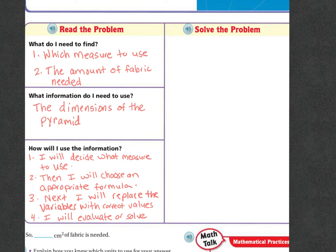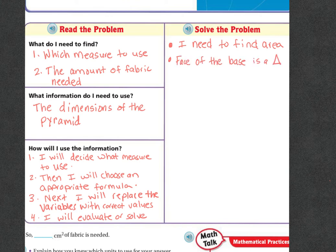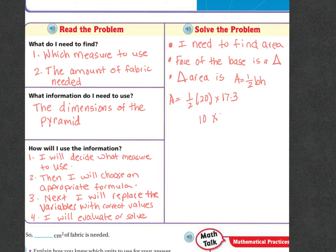So let's solve the problem. Looking at the problem, I need to find the area. So let's choose the appropriate formula. The face of the base is a triangle and we know that the triangle's area is area equals one half base times height for a triangle. So now let's plug in the values. They gave us the base was 20 and the height was 17.3. So I have to do one half times 20 times 17.3. And what I get is half of 20 is 10 times 17.3, area equals 173 centimeters squared.